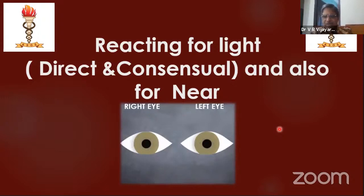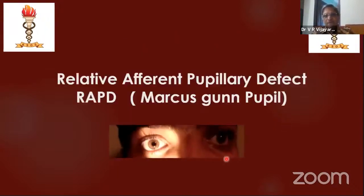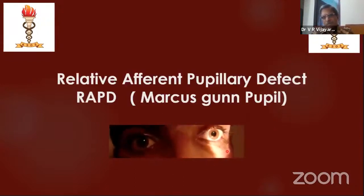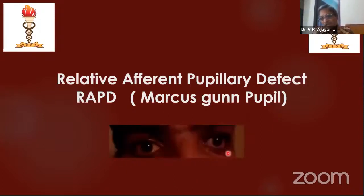Here you can see convergence — the pupil is constricting. These three things you are supposed to look for in examination of the pupil. In the swinging flashlight test, you can identify a relative afferent pupillary defect (RAPD). See here — the left pupil starts dilating when the light is swung to it, but when you switch the light to the right pupil it constricts, and the left also constricts. This means the left eye has a relative afferent pupillary defect.